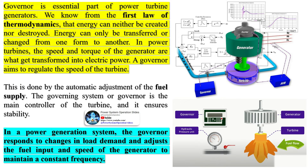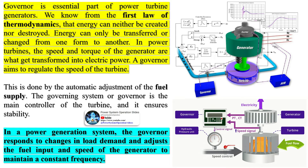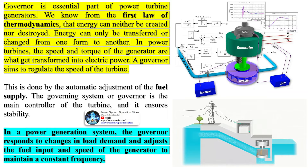The governor is an essential part of power turbine generators. We know from the first law of thermodynamics that energy can neither be created nor destroyed — energy can only be transferred or changed from one form to another. In power turbines, the speed and torque of the generator are transformed into electric power. A governor aims to regulate the speed of the turbine by the automatic adjustment of the fuel supply. The governing system or governor is the main controller of the turbine, and it ensures stability. In a power generation system, the governor responds to changes in load demand and adjusts the fuel input and speed of the generator to maintain a constant frequency.